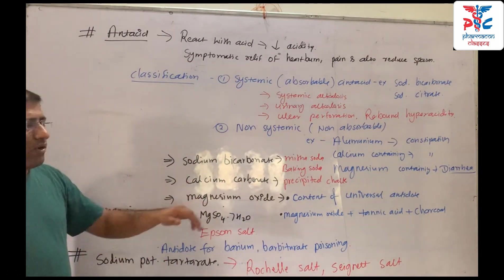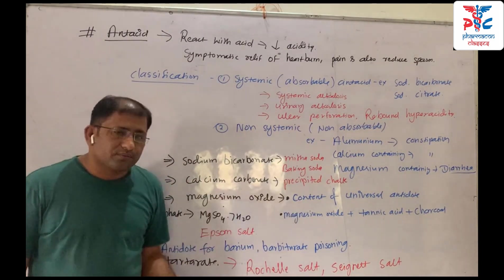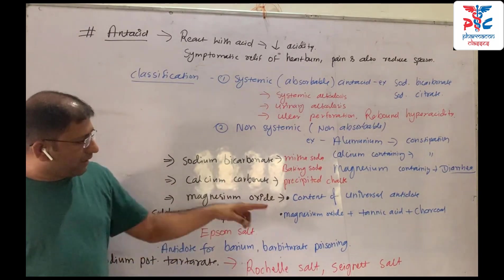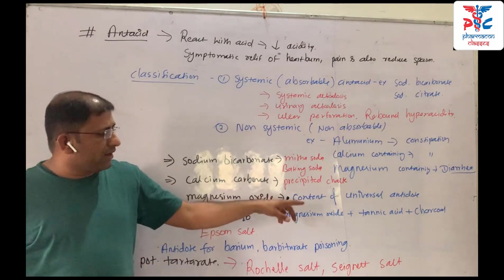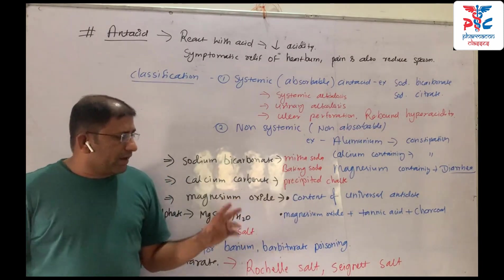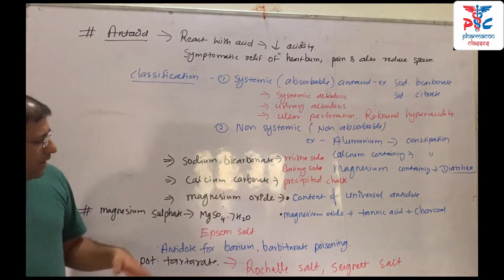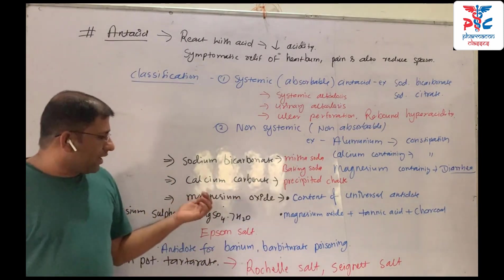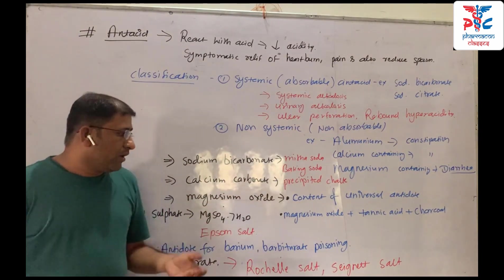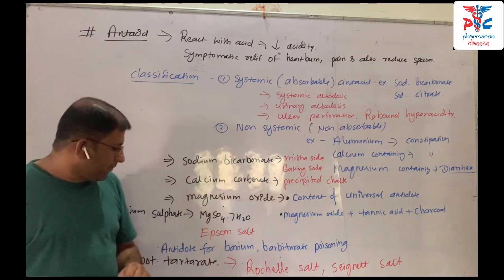Magnesium oxide is a component of the universal antidote. It is included as a content of the universal antidote formula.